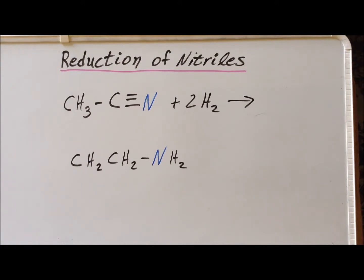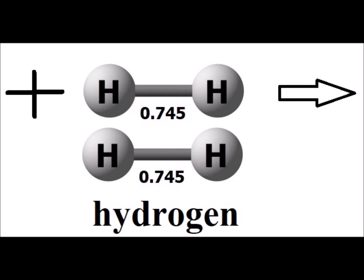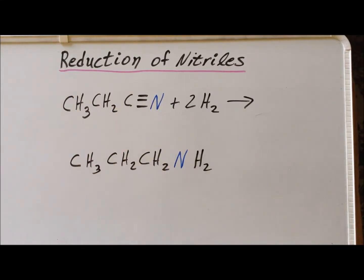In our first reaction, we take ethanenitrile, commonly known as acetonitrile, and reduce it — shown here as catalytic hydrogenation, but we get the same results with a chemical reducing agent like lithium aluminum hydride. Our product is ethylamine. For our next reaction, we reduce propanenitrile to N-propylamine.